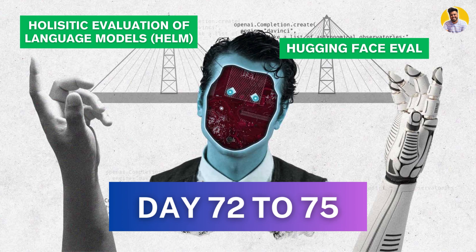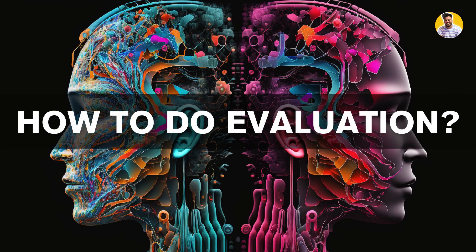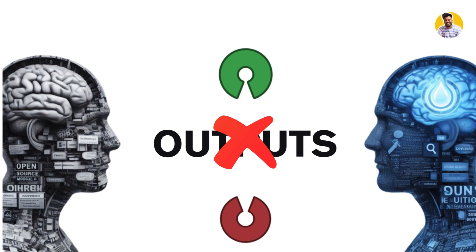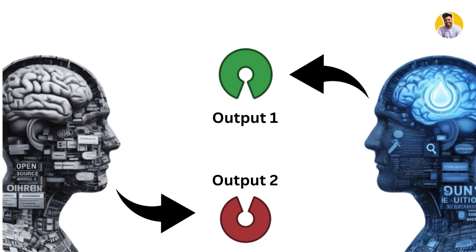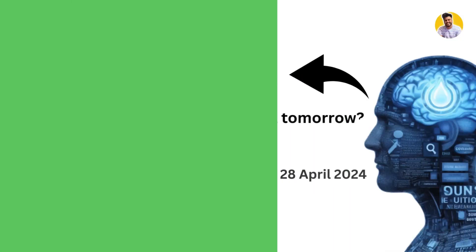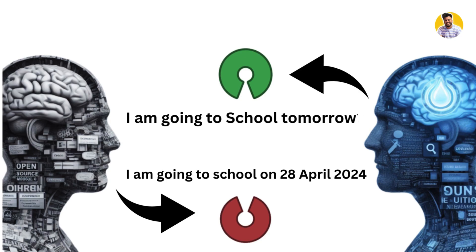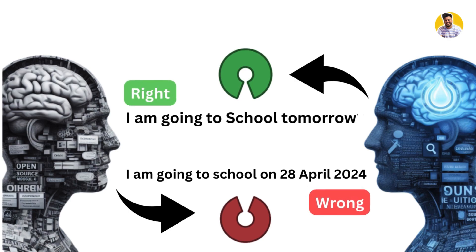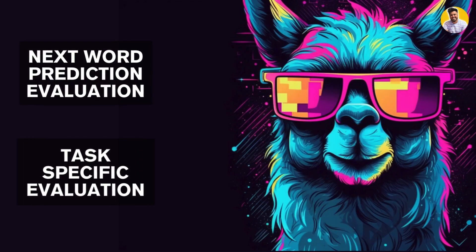How do you actually do LLM evaluation? You do not evaluate based purely on text outputs, because outputs can take many different forms and still be correct. For example, 'I am going to school tomorrow' and 'I am going to school on the 28th of April 2024' are two sentences generated at the same time with no real difference. But if you evaluate on raw text output, the evaluation framework will say these two outputs are completely different — which is wrong.